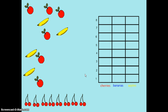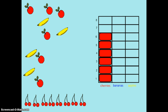When I create a bar graph, I do one box for each vote. Since eight students picked cherries, I'll color in eight boxes on my bar graph. One, two, three, four, five, six, seven, eight.